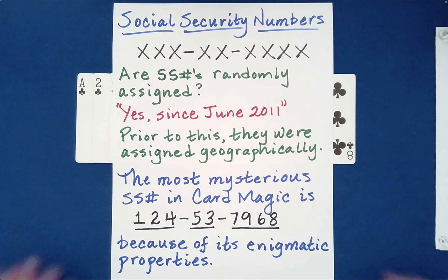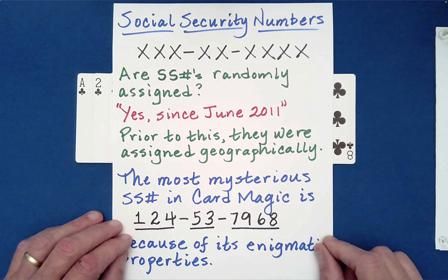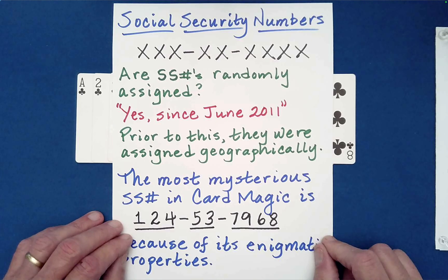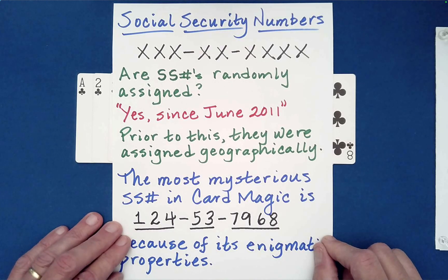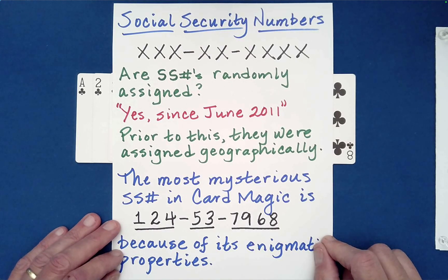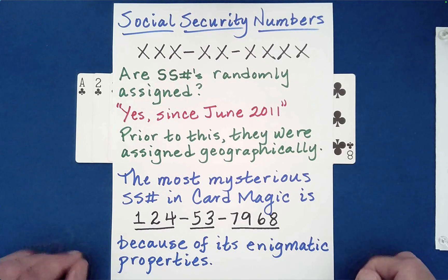Here's a question for you: Are social security numbers randomly assigned? I actually had to research this. The answer is yes, since June of 2011. Prior to that, they were assigned geographically. One of the most mysterious social security numbers in card magic is the number 124537968 because of its enigmatic properties.